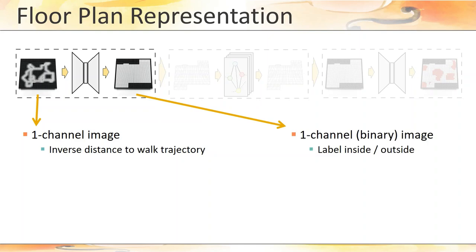The inputs to the interior space extraction network is essentially a one-channel image, which stores at each pixel the normalized inverse distance to the projection of the input trajectory onto the 2D domain of the ground plane. The output is a one-channel binary image that encodes at each pixel whether the corresponding cell is inner or outer space, that is, whether it is part of the interior footprint or not.